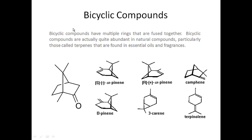This is a pre-class lecture for Monday, September 24th. We've been talking about cyclic alkanes last Wednesday, talking about naming, and then on Friday talking about conformations of cyclohexanes. The last bit in chapter three is to talk about when you fuse rings together and form what are called bicyclic compounds.